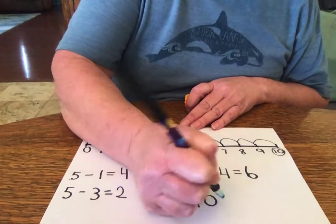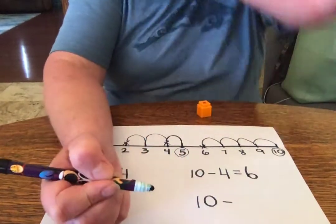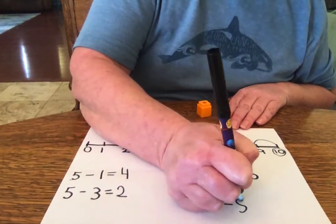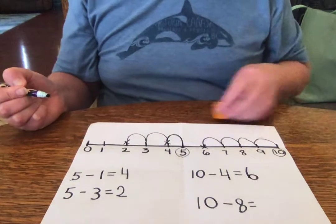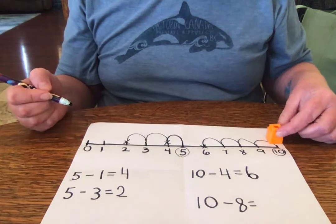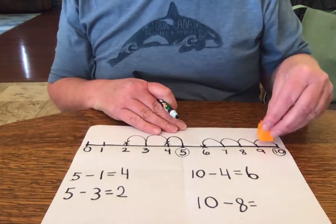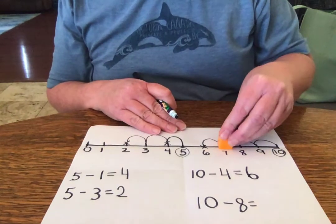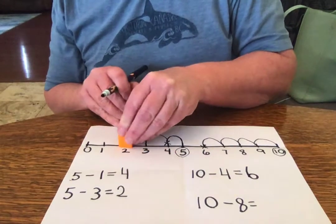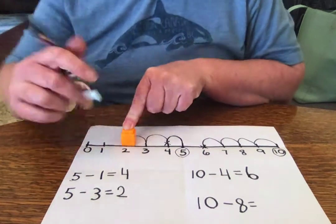Let's try 10 minus... Let's go with 8. That's a big number, isn't it? Okay, so we start at 10 up here. Now, if you want to just use an object. 1, 2, 3, 4, 5, 6, 7, 8. Where did I land? I landed on 2.